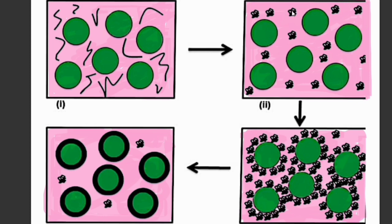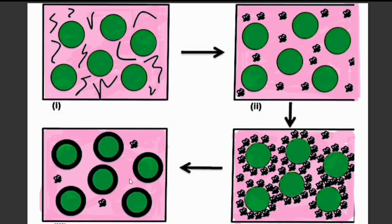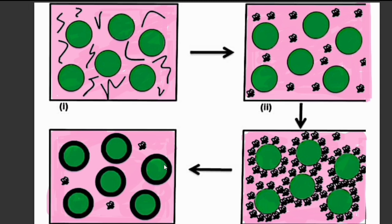In the second step, coacervation occurs and we get three immiscible phases — the polymer phase, the pink color solvent phase, and the green color dispersed phase. In the third step we deposit the polymer molecules around the core material. In the fourth step we increase the temperature so the polymer molecules form a hard layer around the core material and we get microencapsules.